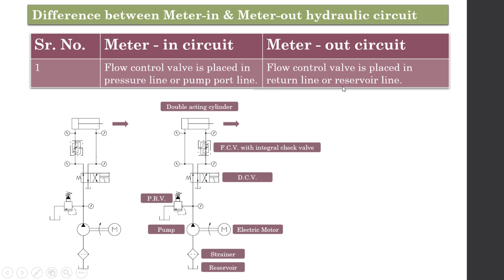The circuit consists of a reservoir, strainer, pump, electric motor, pressure relief valve, direction control valve, and a flow control valve with an integral check valve. This is the feed direction or direction of motion of the piston and piston rod, and this is the double acting cylinder.